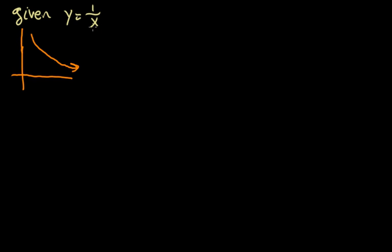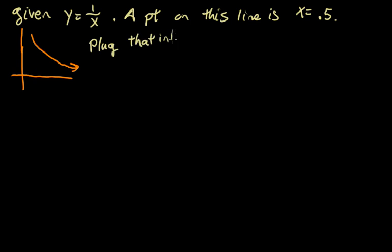And we will say a point on this line is x equals 0.5. We can plug that into the equation and get the point 0.5, 2. So we have this point here, which is 0.5 comma 2.